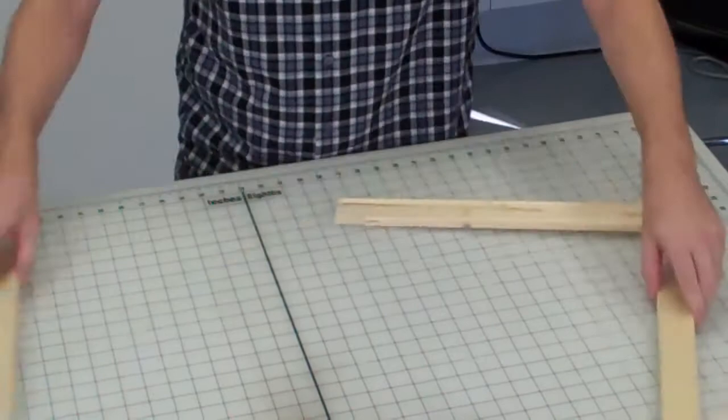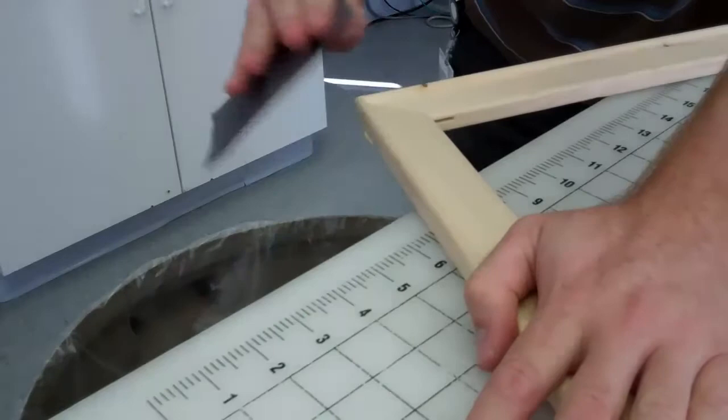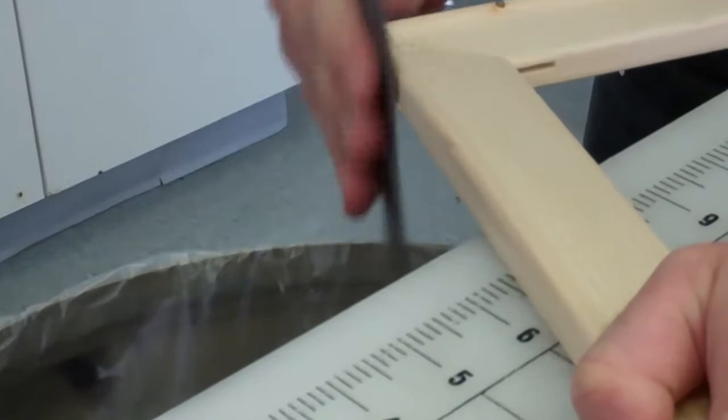Once you've assembled your stretcher bars and the connections are nice and snug, take some sandpaper and smooth over the corners. This will ensure that the canvas is not damaged.